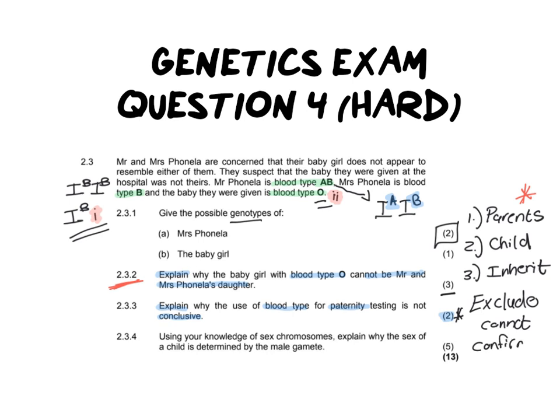For example, using Mr. Fonella, we can confirm that cannot be his child — so we can exclude him. But if there was another man who was a possible father and he happened to have blood group O, that doesn't exclude him, but it also can't confirm he's the father. I've given three possible answers there, but you only really need two.